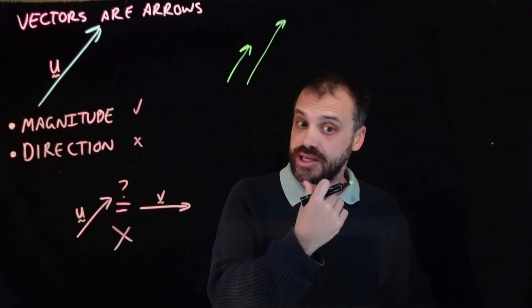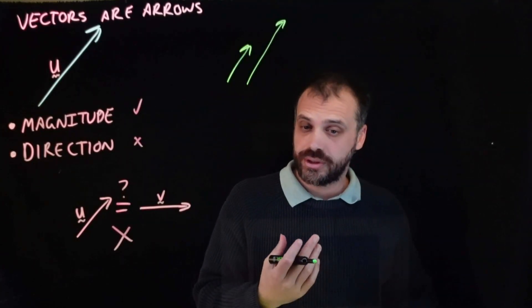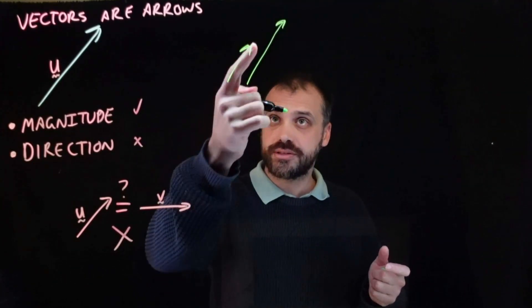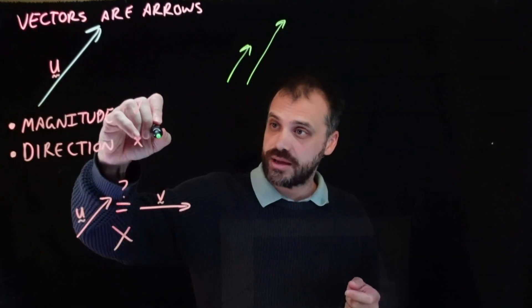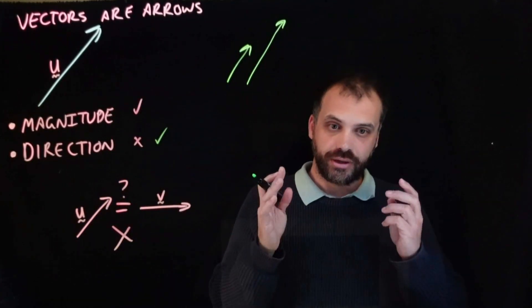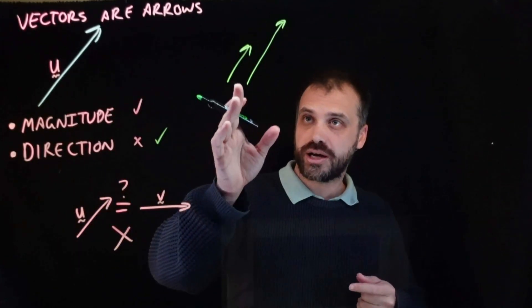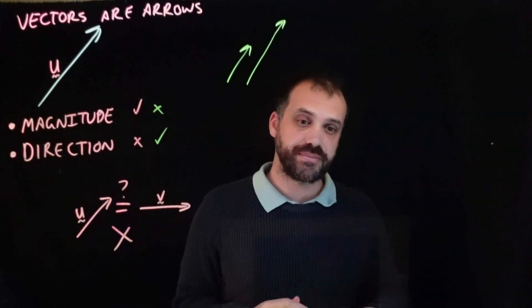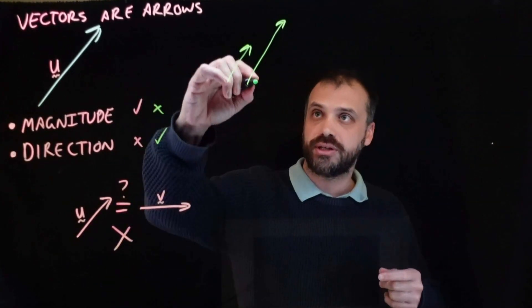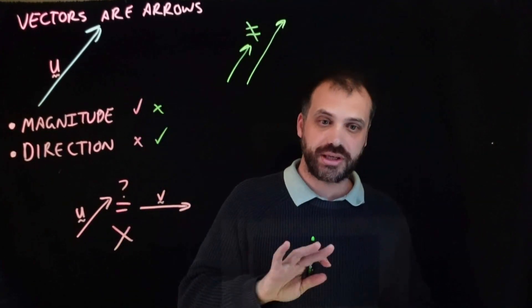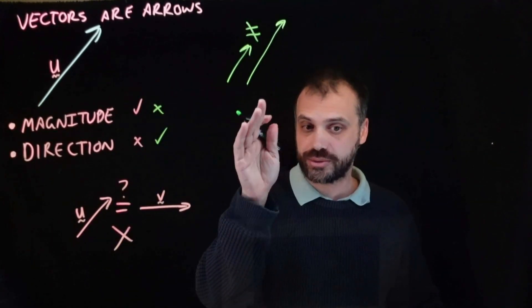Are these two vectors equal? Well, their directions are the same — they're moving in the same direction. But their magnitudes are not the same. So these are not equal to each other.